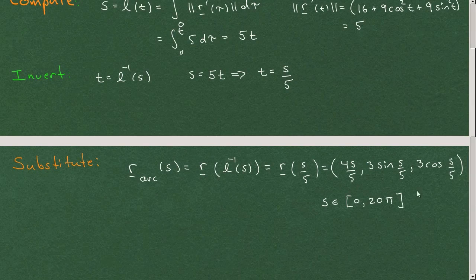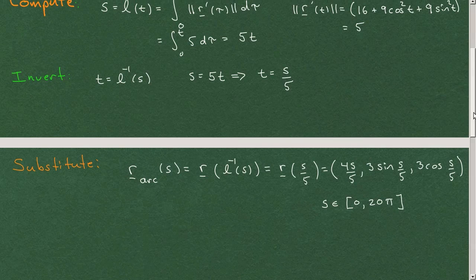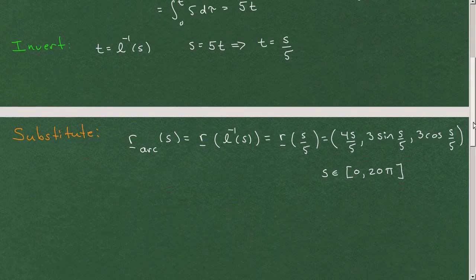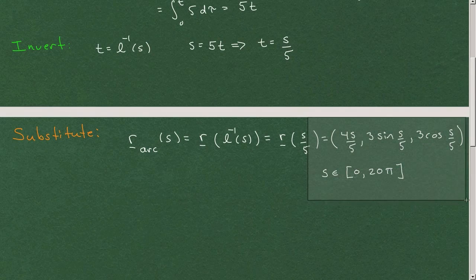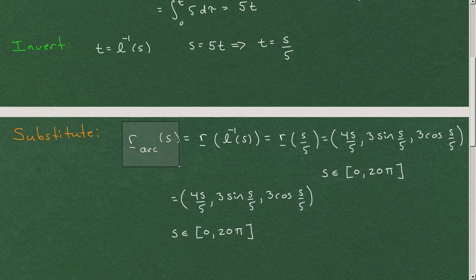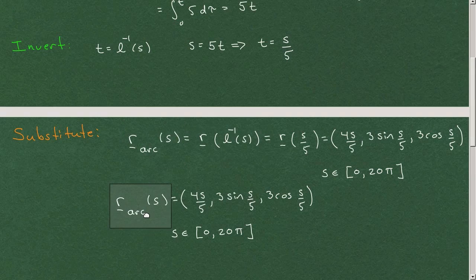All right, so this expression, together with the interval, is the reparameterization of the curve by arc length. So let me just, in fact, make that completely clear and grab it. All right, so this then is our answer.